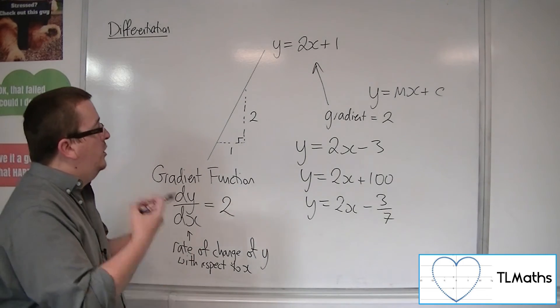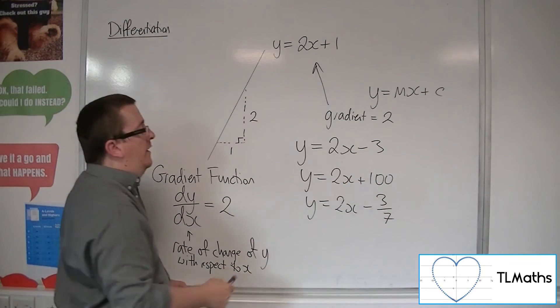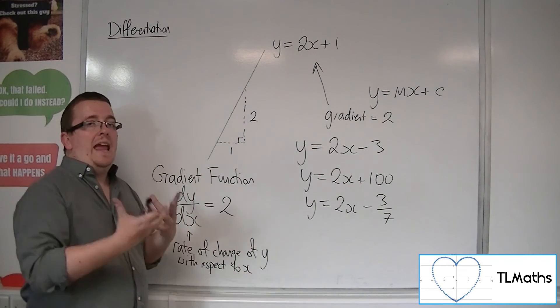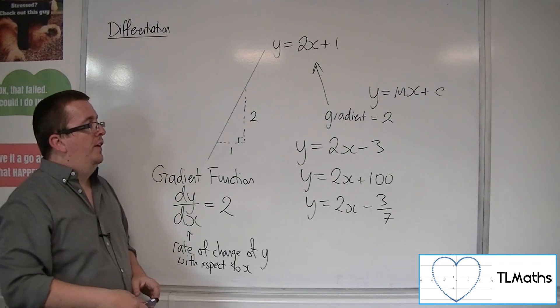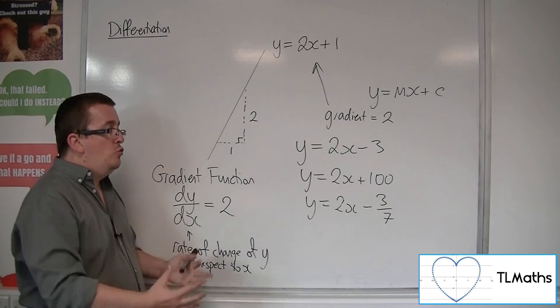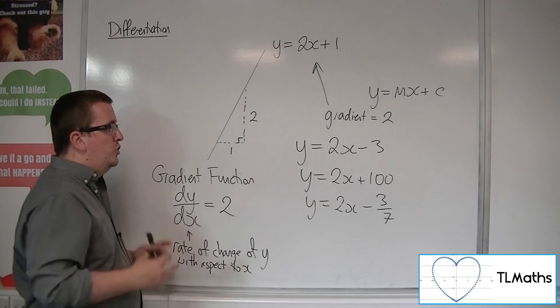It is fixed, it is constant, and this number that is on the outside doesn't make any difference. It just rises or lowers the graph into another position. The gradient of it is unchanging. That doesn't change the gradient.